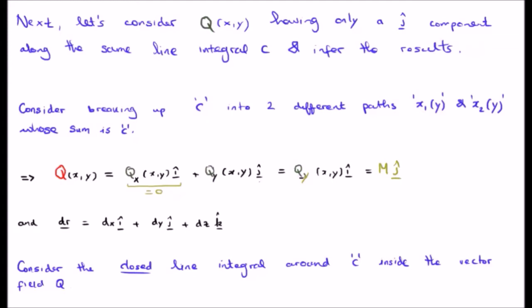Now the point here is that the vector field Q has no i-hat component, so this section Q sub x will go to zero, but Q sub y is non-zero, so Q really just is Q sub y in the j-hat direction.